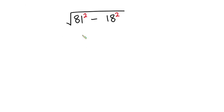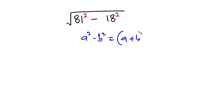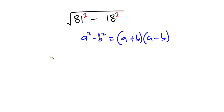From algebraic identities, if you have a squared minus b squared, this is the same as (a + b)(a - b). I'm going to apply the same idea here, so this becomes the square root of (81 + 18) times (81 - 18).